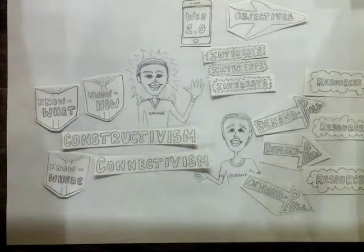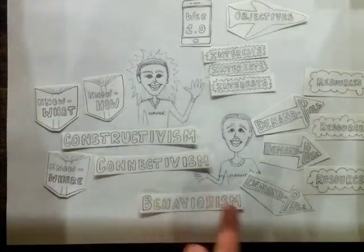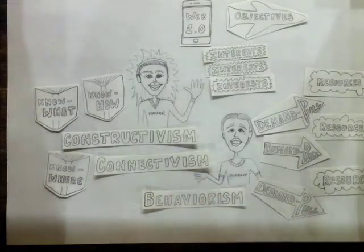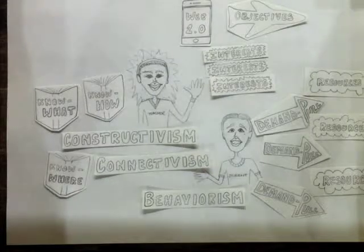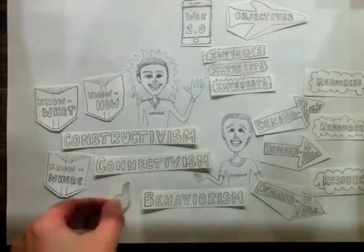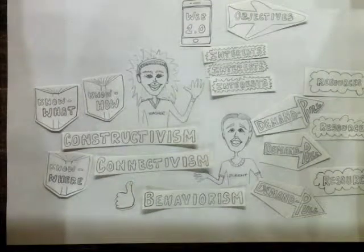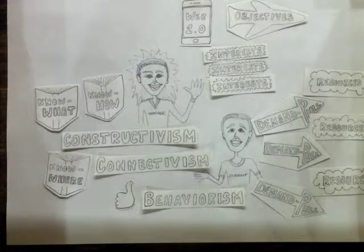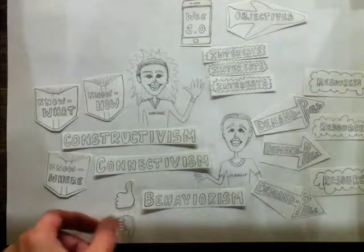Behaviorism is a process of choosing future behaviors based on past responses. Behaviors that result in rewards will be repeated, such as posting a blog online which receives meaningful feedback. Behaviors that result in punishment will be stopped, such as posting a blog online which receives harsh feedback.